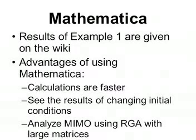The rest of the problem can be solved as explained on the wiki. As you can see, using Mathematica to solve this problem, you are able to solve it much more quickly than solving it by hand. In addition, you can change the initial conditions and quickly see how the results would change. Lastly, you can analyze MIMO control systems using RGA that involve many variables and thus create large matrices that would be very time consuming to solve by hand.